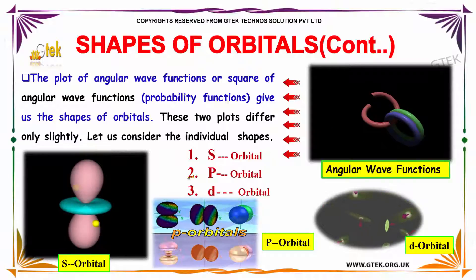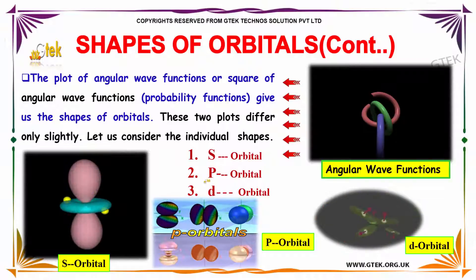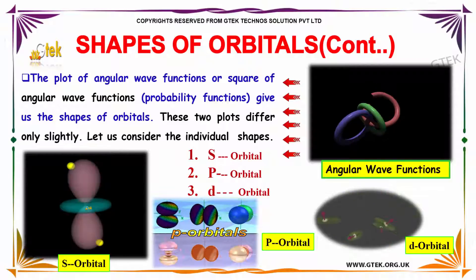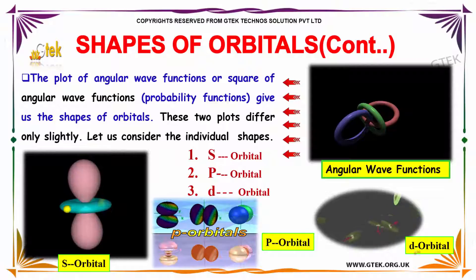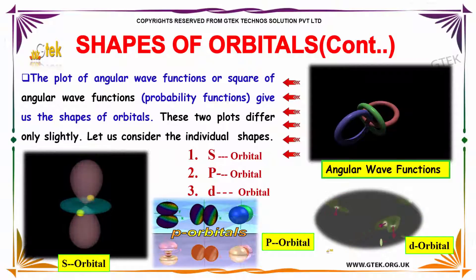There are three different orbitals we are going to discuss. The first is s orbital, the second is p orbital, and the third is d orbital.